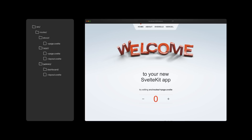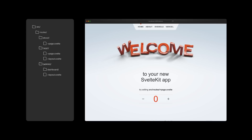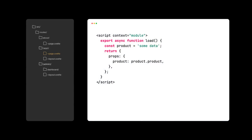There have also been some big changes made to how you load data into a page. Previously, the load function would be called in a page component's context module script block, and the returned data would become available to the page as a prop. A page calling the load function would have looked something like this.